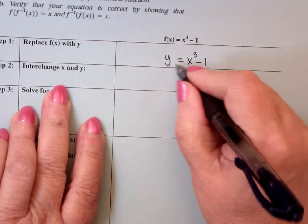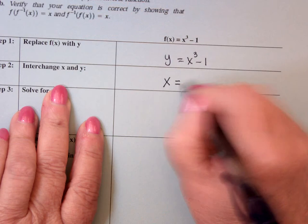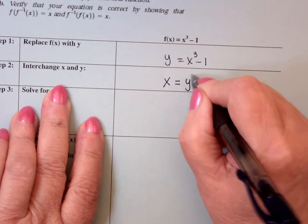Interchange x and y, so wherever I have a y, I put an x, and wherever I have an x, I put a y.